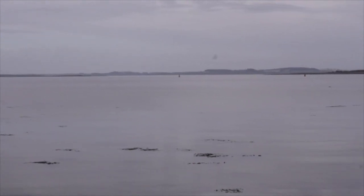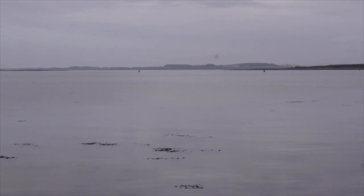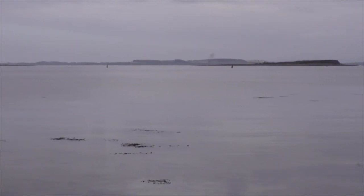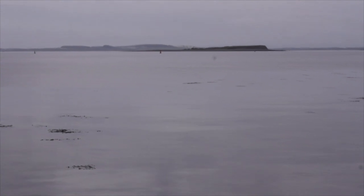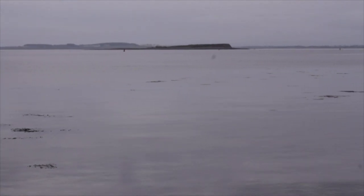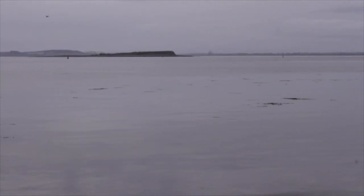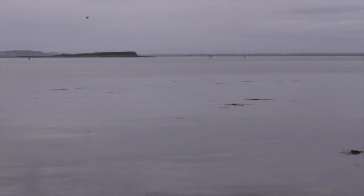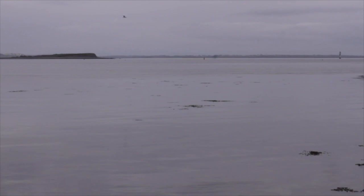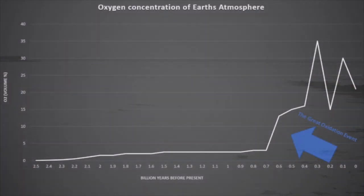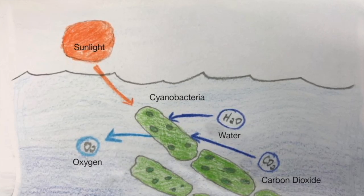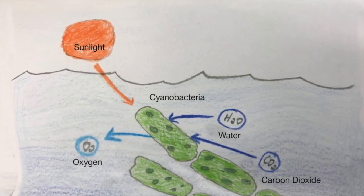Approximately 2.45 billion years ago, the Earth was a hostile world with limited oxygen in the atmosphere, and any dissolved oxygen in the oceans was restricted to limited shallow regions. This changed during the Great Oxidation Event, when cyanobacteria in the world's oceans began producing oxygen through photosynthesis.